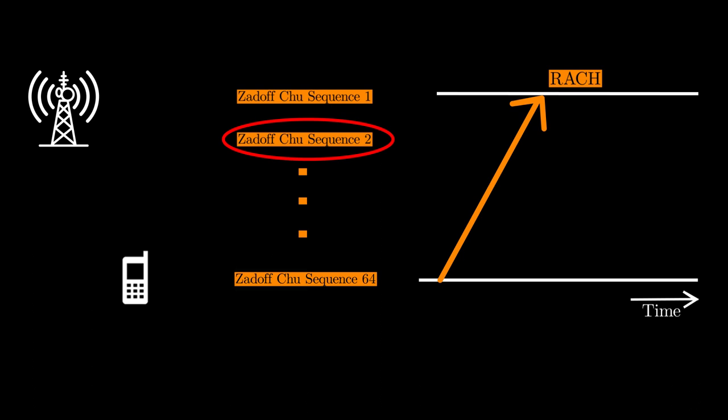The reason for having 64 Zadoff-Chu sequences is that if another UE is also doing RACH procedure at the same time, then that UE will most likely select a different Zadoff-Chu sequence, thereby avoiding collision.